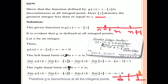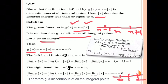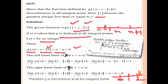The given function is g(x) = x − [x]. This function is defined at all integral points. Let n be an integer. Then g(n) = n − [n] = n − n = 0, since [n] = n for any integer n.